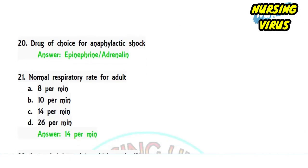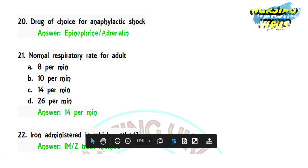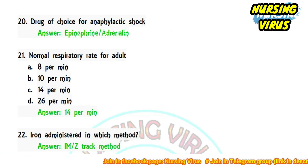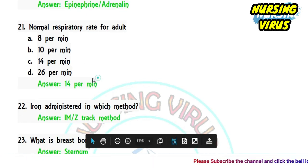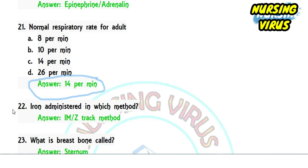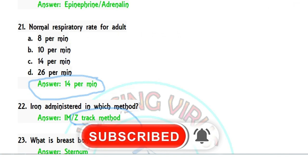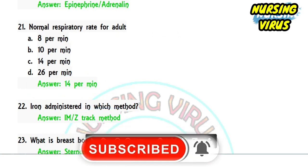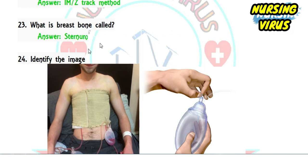Question 20: the drug of choice for anaphylactic shock is adrenaline (epinephrine). Question 21: the normal respiratory rate for adults — options 8, 10, 14, or 26 per minute. The correct answer is 14 respirations per minute. Question 22: iron injection is administered by the Z-track method to avoid leakage of the iron supplement into surrounding muscles.